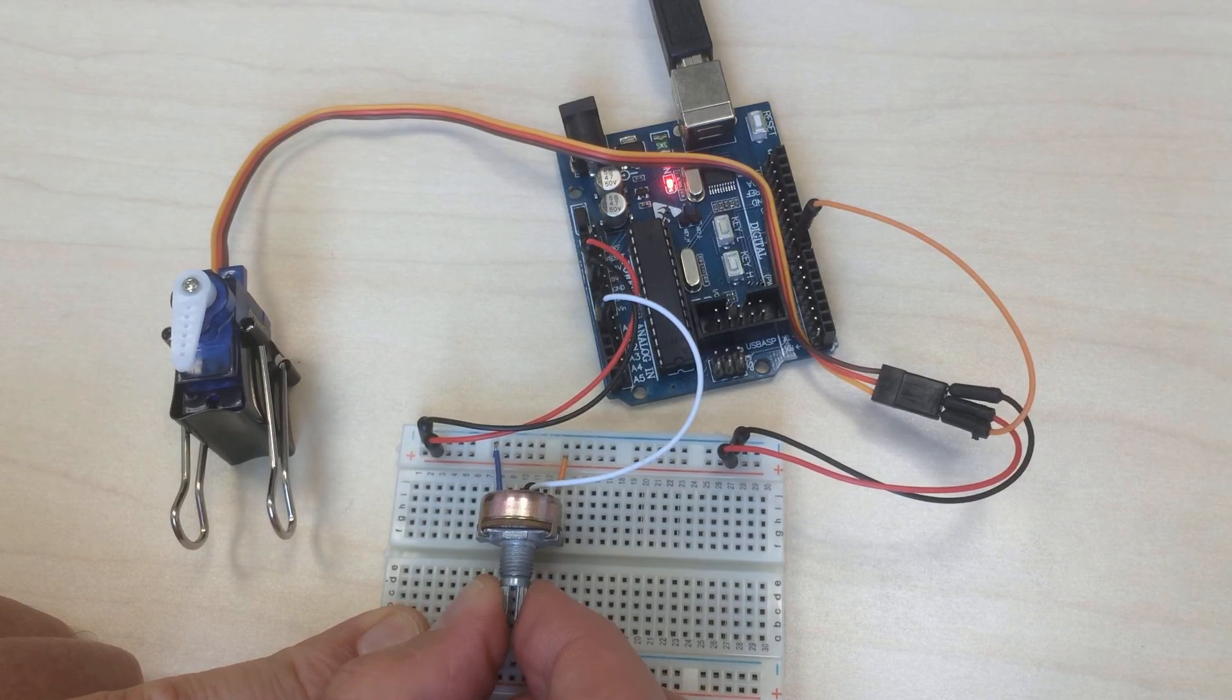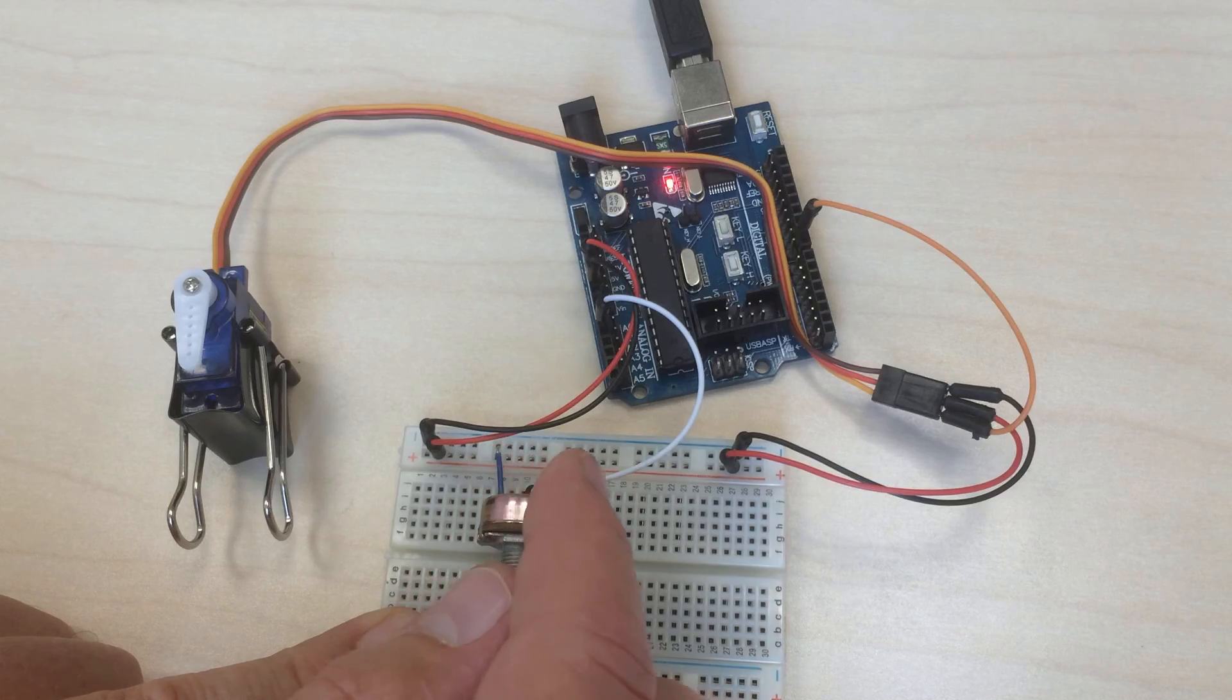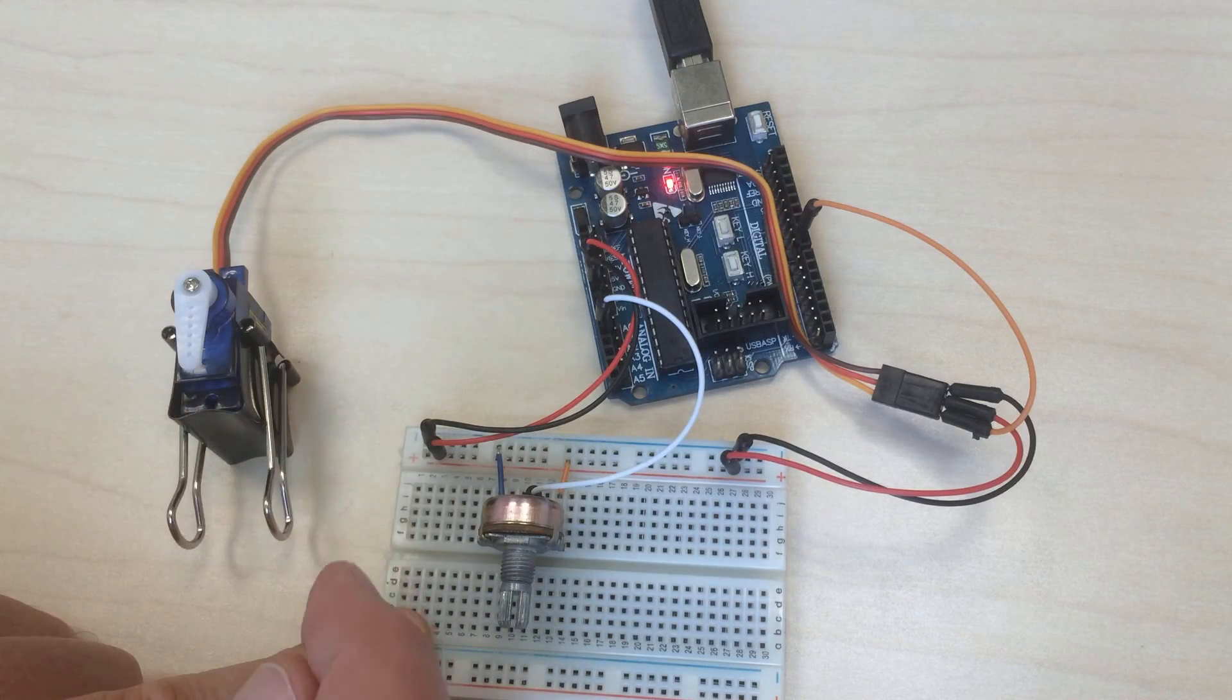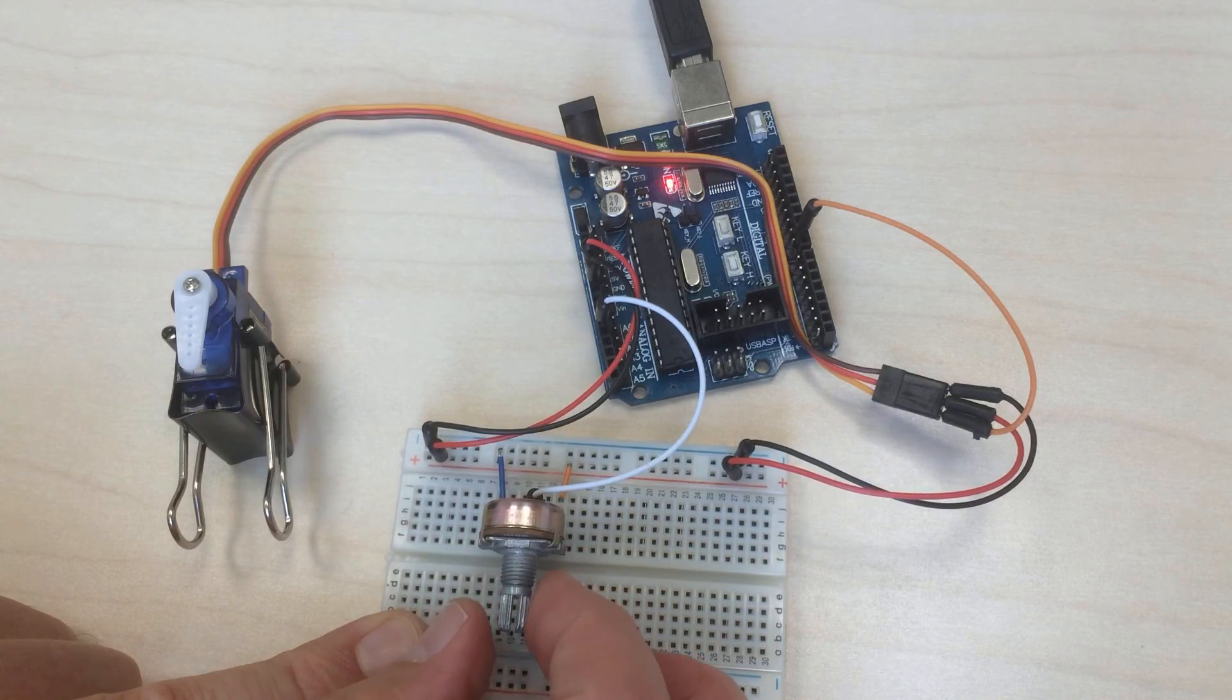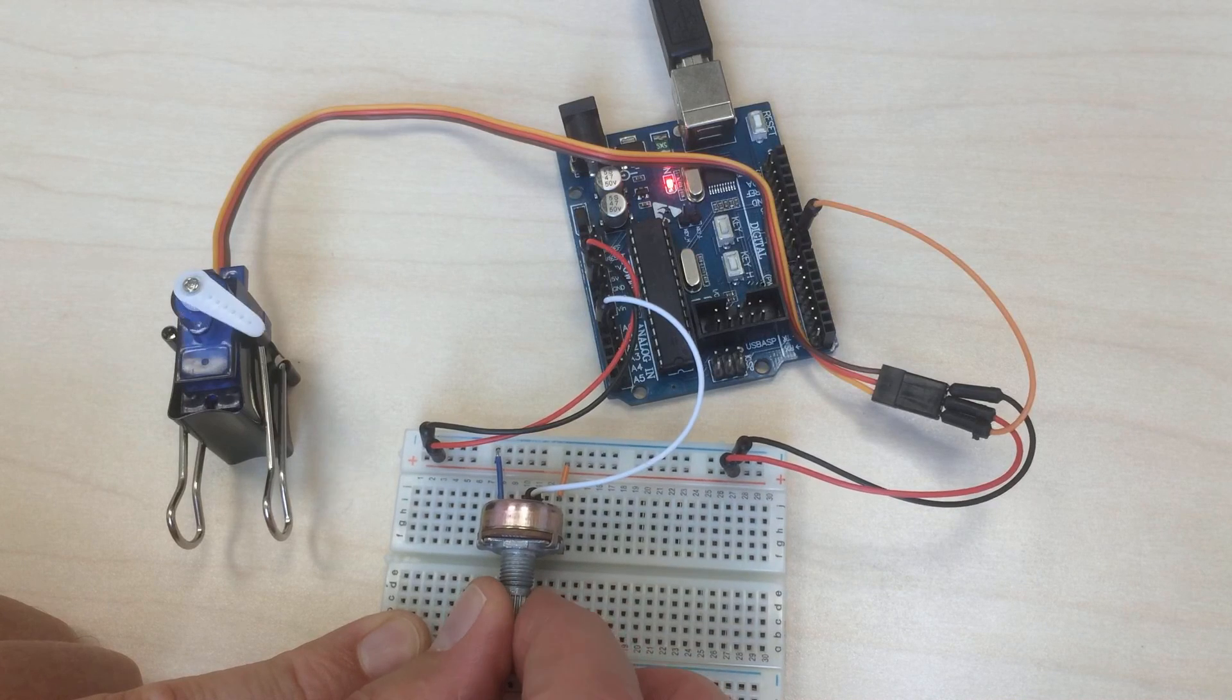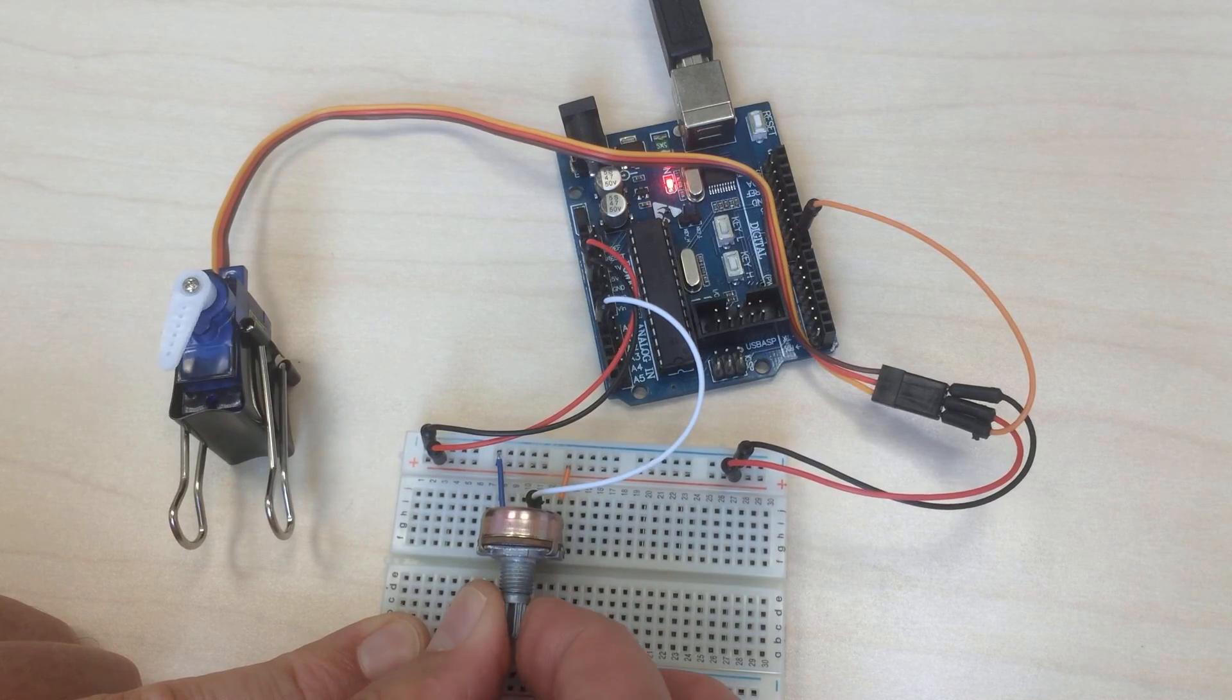And so here you see that the microcontroller is able to interact with the real world. So it reads out the voltage of the potentiometer and then calculates a position that corresponds to the position of the swiper in this potentiometer. Isn't that awesome? I could do this all day.